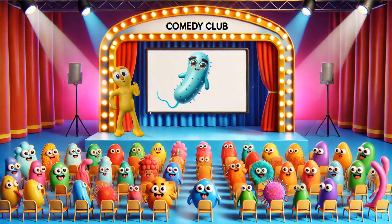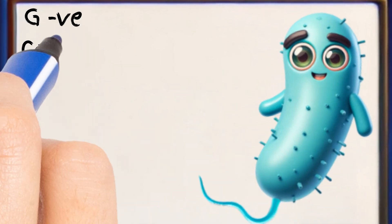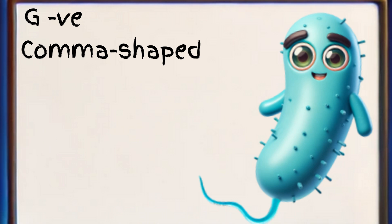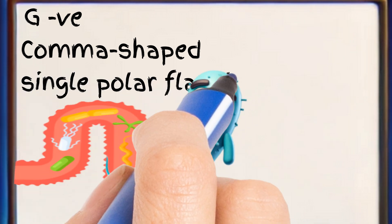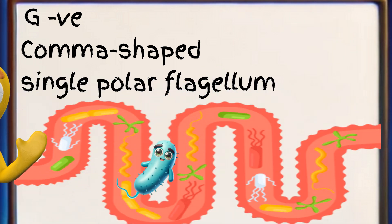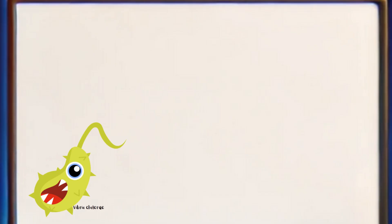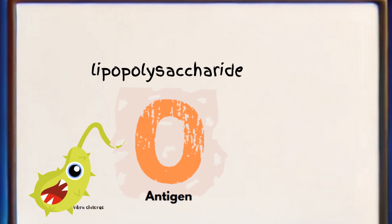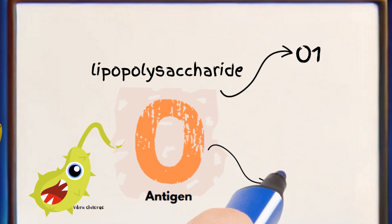Meet Kali, our charming and highly motile friend. Kali is a gram-negative, comma-shaped bacterium with a distinctive appearance. Kali uses his single polar flagellum to swim through the digestive tract. Vibrio cholerae, classified based on differences in the O antigen of its lipopolysaccharide, has two main troublemaking serogroups: O1 and O139.